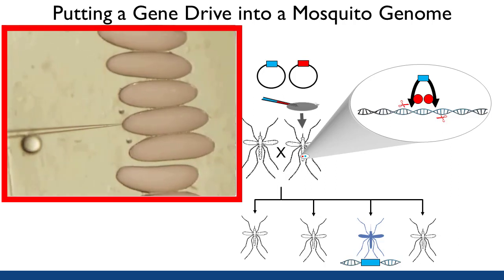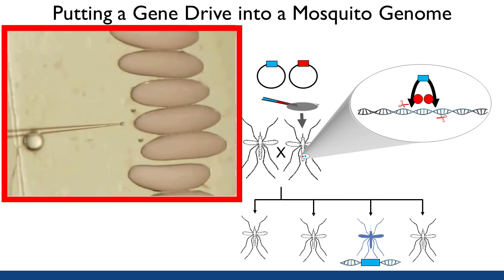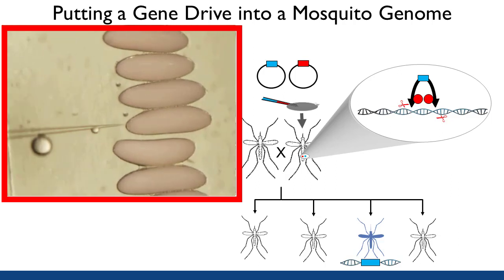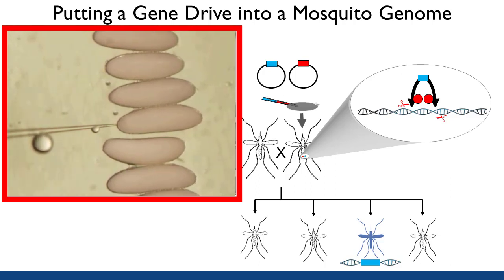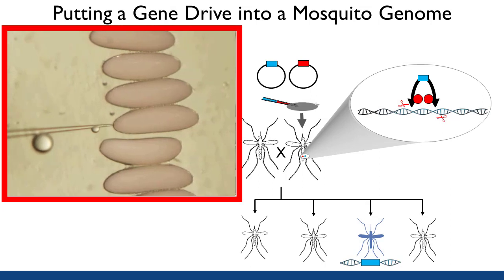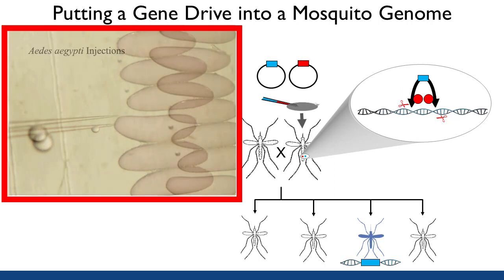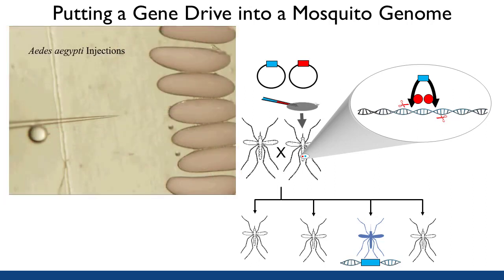The glass needle on the left is filled with a solution containing the transgene, and if you watch closely, you might be able to see the liquid in the needle being expelled into the embryos. This is a little like brain surgery, except here, many of the patients are expected to die, even at the hands of an experienced and talented surgeon. This is not easy.